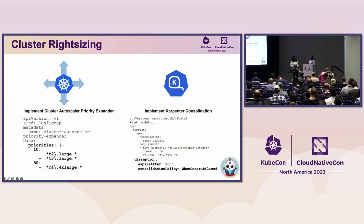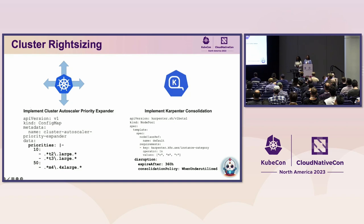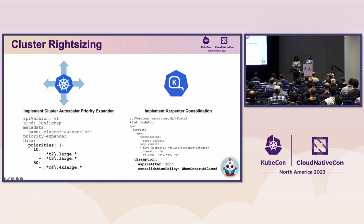You can say, for example, I want to prioritize a T3 large instance type over a 4XL large instance type. This helps save on cost because if you only have two pending pods, you don't need a 4X extra large instance type — you just need the large one. Think about using Priority Expander to help save on those costs.